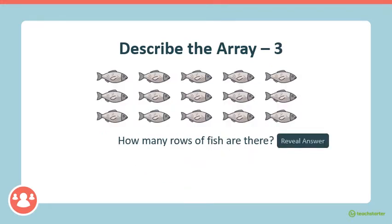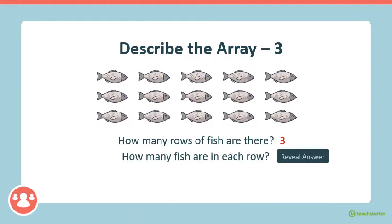Okay, here's another array. How many rows of fish are there? That's right, there's three rows of fish. And how many fish are in each row? There's five fish in each row. So there are three rows of five, or three multiplied by five.